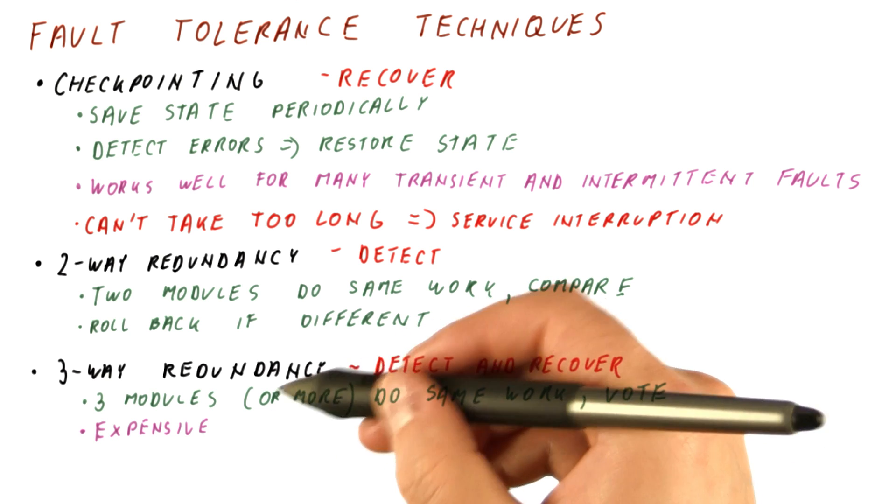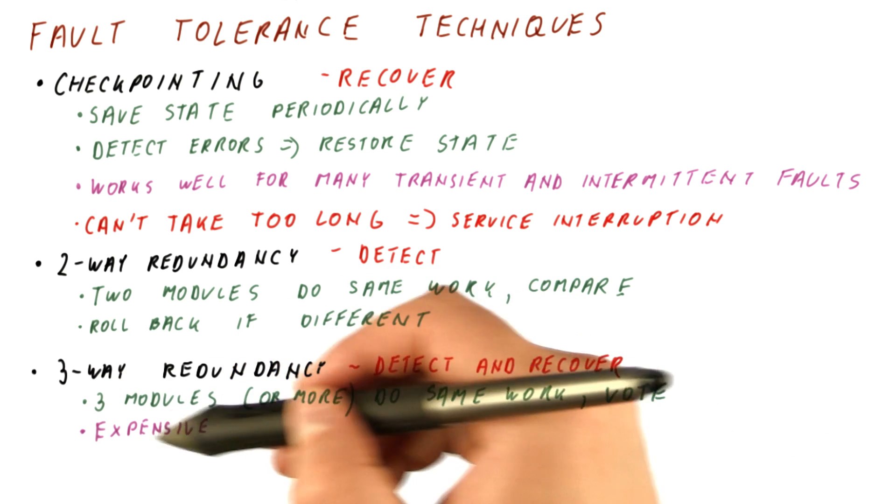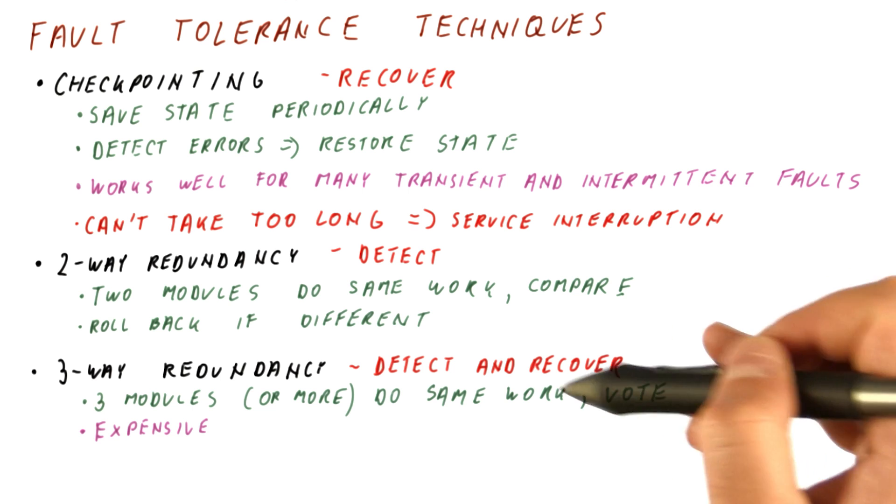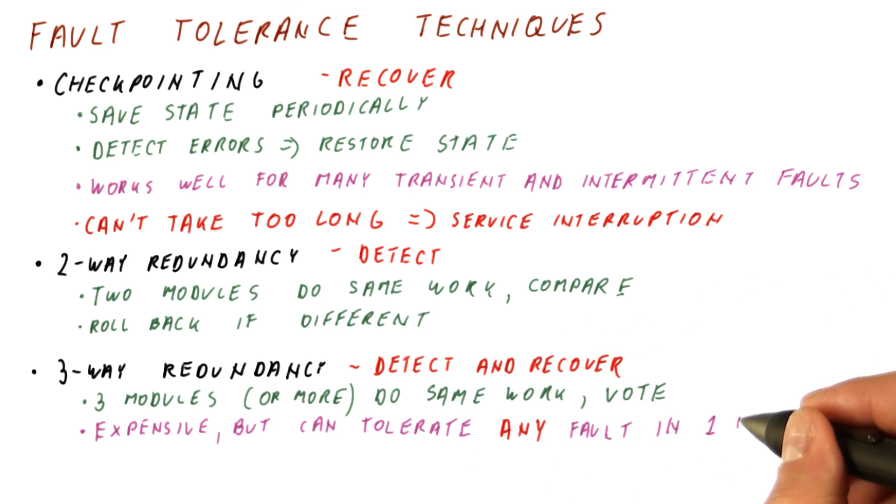This technique is expensive. You need three times the hardware plus the voter that you would have without fault-tolerance techniques. But in return, it can tolerate any fault that can occur in any one of the modules. As long as the fault is affecting only one module, we can tolerate it.